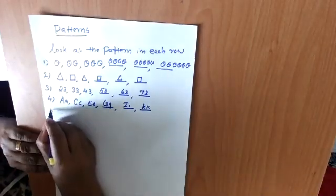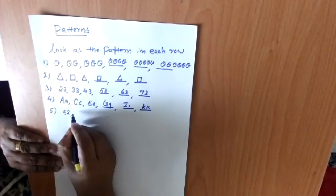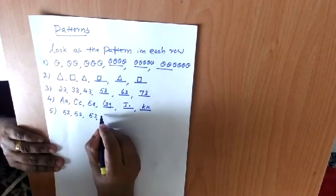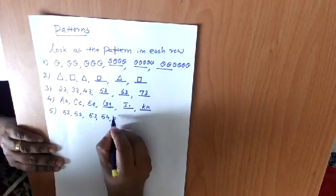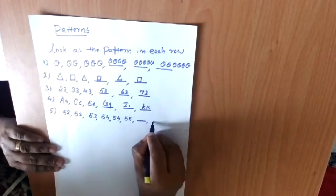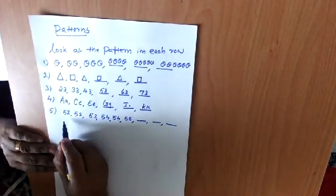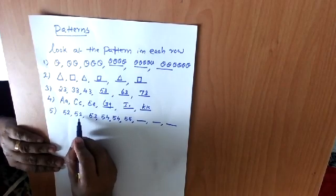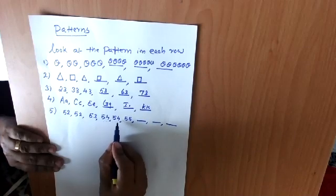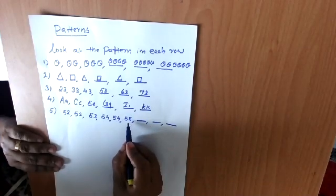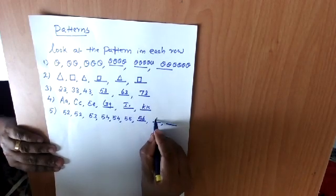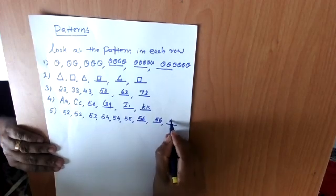Another example: 52, 52, 53, 54, 54, 55 — dash, dash, dash. Here, 52 appears two times, then 53 one time. Again 54 appears two times, then 55 one time. Then what will come next? 56, 56 — two times — then 57.